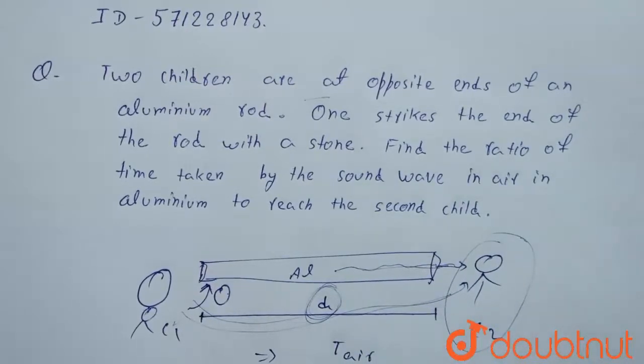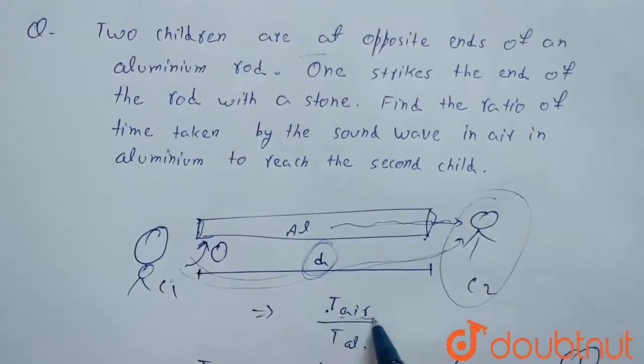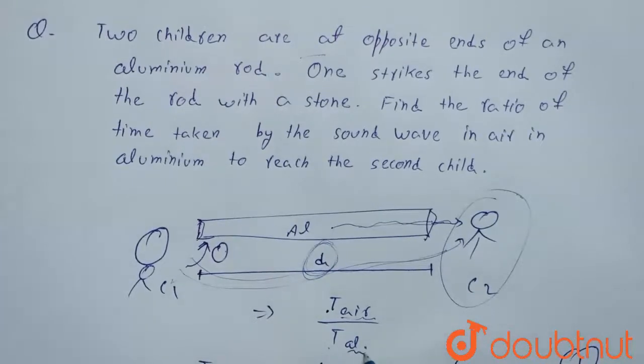So we have to find the ratio that is time taken by sound to reach through the air upon time taken by sound to reach through the aluminium. So we have to find this ratio.